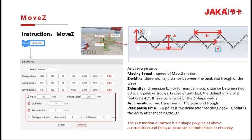Arc transition is for the peak and trough motion. Peak pulse time with positive X means the pause time after TCP reaches the peak, while negative is for the trough side. The TCP motion of MOVZ is a Z-shape polyline as shown above. Arc transition and delay at peak can be both ticked or one only.